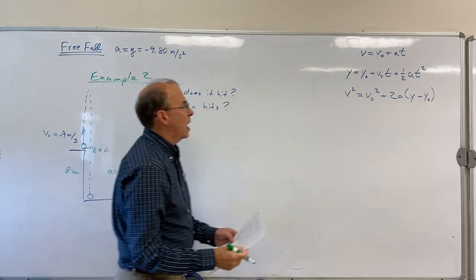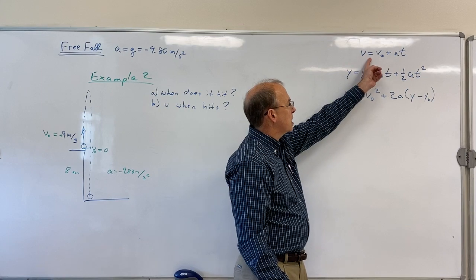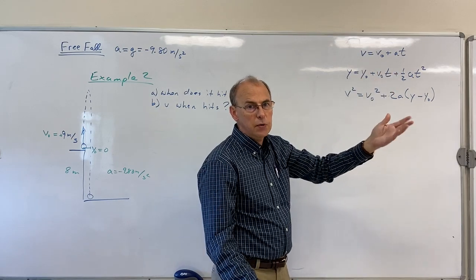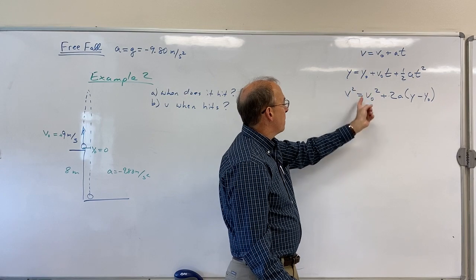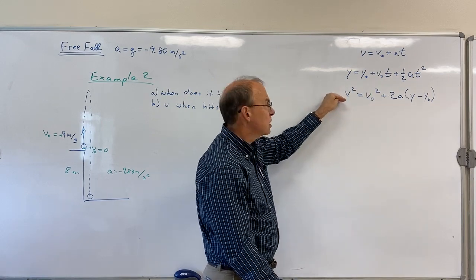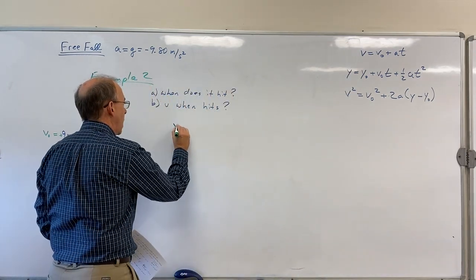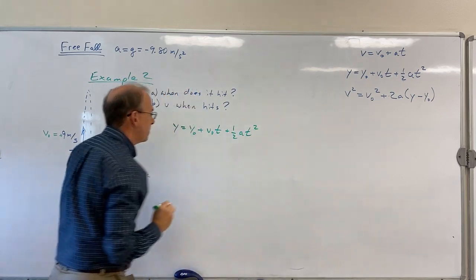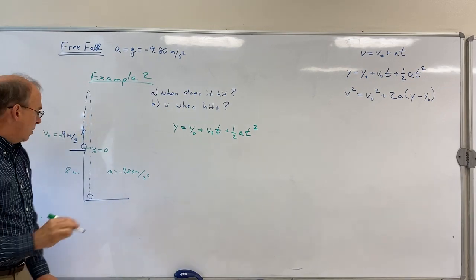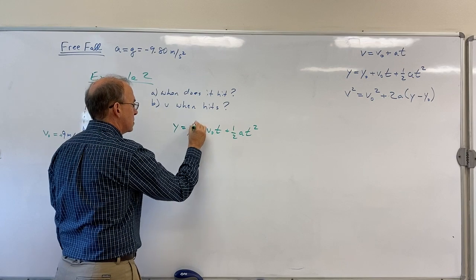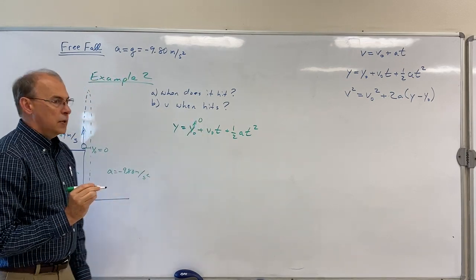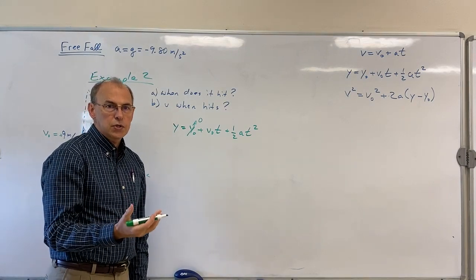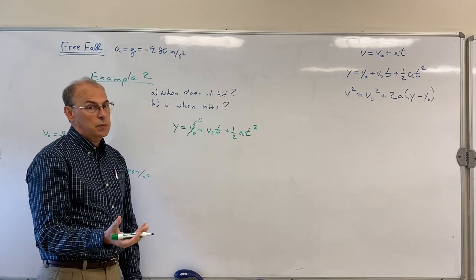So when does it hit? That's a time. I look at this equation, there's time in it, but I would have to know the velocity when it hits. After it hits the velocity is zero, but that doesn't count so I can't put zero in there. This doesn't have time in it so I can't use that one. So let's use this one. y = y₀ + v₀t + ½at². This is a case where I actually break my rule of doing my algebra before I plug in the numbers because I'm going to get a quadratic equation and I'm going to need the quadratic formula, and it's a little tidier if I go ahead and plug the numbers in.